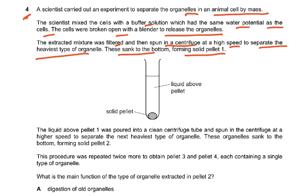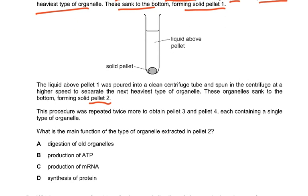The liquid above pellet 1 was poured into a clean centrifuge tube and spun at higher speed to separate the next heaviest organelle. In a plant cell it would have been the chloroplast, but this was an animal cell, so the next heaviest is the mitochondria, forming pellet 2. The procedure was repeated twice more to obtain pellets 3 and 4 — each smaller than the previous, each containing a single type of organelle.